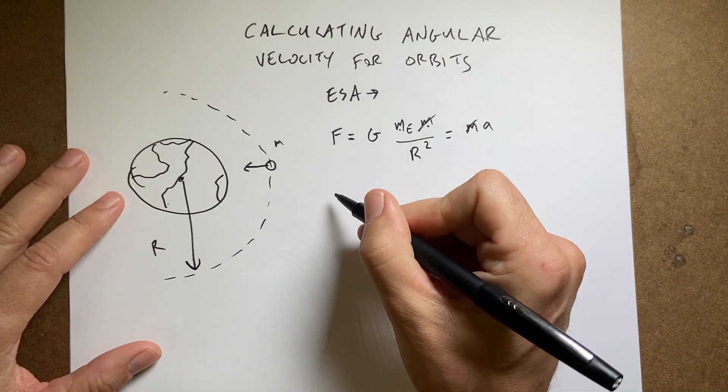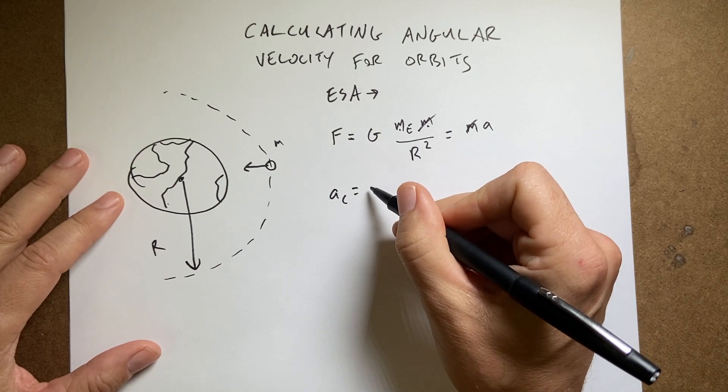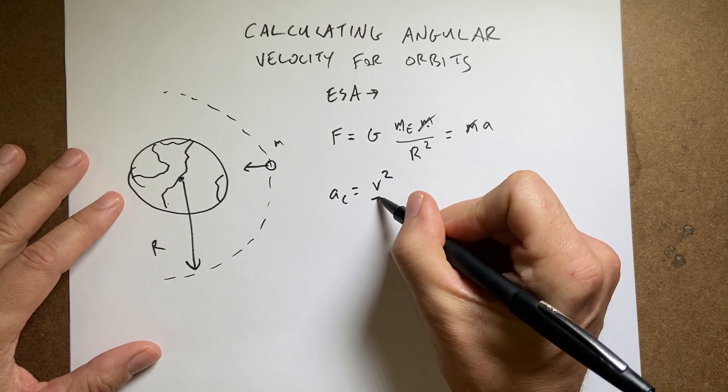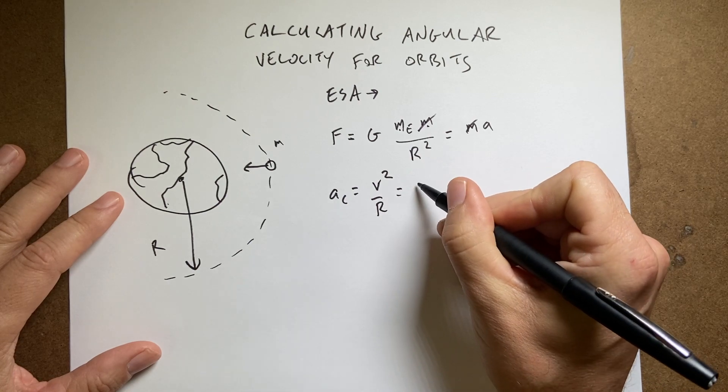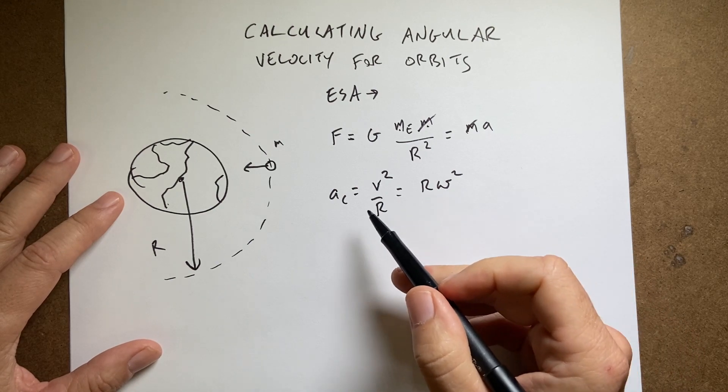Since the object is moving in a circle, the centripetal acceleration is going to be equal to v squared over r, or r omega squared, where omega is the angular velocity. These two are equivalent ways of writing the same thing.